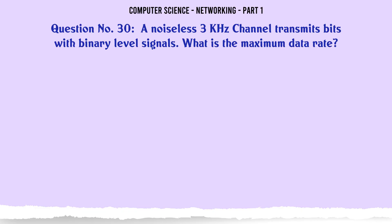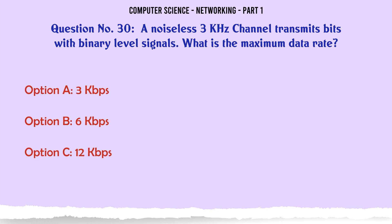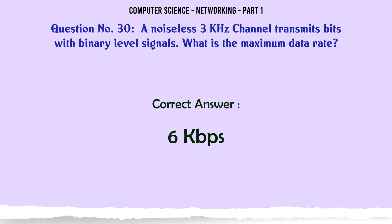A noiseless 3 kHz channel transmits bits with binary level signals. What is the maximum data rate? A. 3 kbps. B. 6 kbps. C. 12 kbps. D. 24 kbps. The correct answer is: 6 kbps.